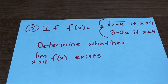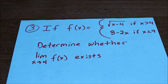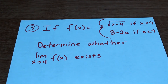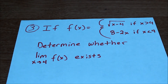Now let's look at another example — more of a review from the last video. If f(x) equals √(x minus 4) when x is greater than 4, and 8 minus 2x when x is less than 4, determine whether the limit as x approaches 4 of f(x) exists. We need to recall a definition from the previous video: the limit from the left must equal the limit from the right in order for a limit at any point to exist.